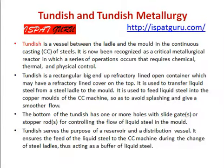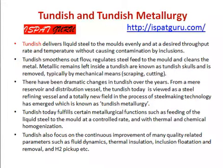The bottom of the tundish has one or more holes with slide gates or stopper rods for controlling the flow of the steel into the mold. Tundish serves the purpose of a reservoir and a distribution vessel. It ensures the feed of liquid steel to the continuous casting machine during the change of ladles, thus acting as a buffer. Tundish delivers liquid steel to the mold evenly and at the desired throughput rate and temperature without causing contamination. It smoothens out flow, regulates the steel feed to the mold, and cleans the metal.